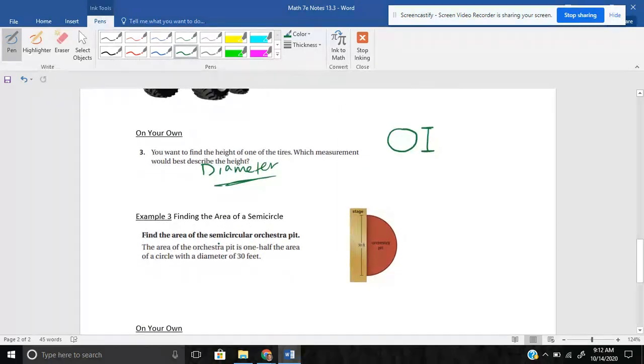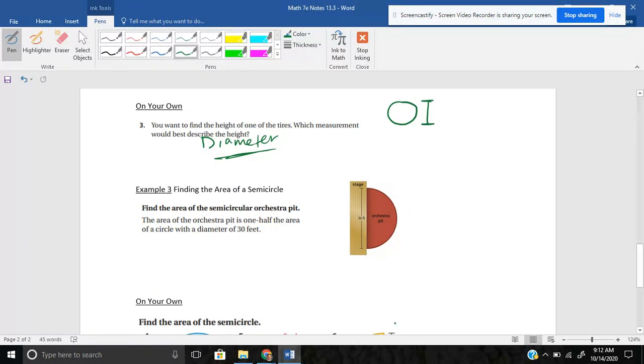Last example here. I know we're going kind of quick, but hopefully you're picking up on it. If you need more questions, again, be sure to ask. It says find the area of the semicircular orchestra pit. So we're trying to find the area of the red region here. This is the orchestra pit. The area of the orchestra pit is one half the area of a circle with a diameter of 30 feet. So a couple things that are important here. If we were to envision this as a full circle, we know how to find the area of a full circle. It's area equals pi r squared. Since we're just finding the semicircle, half of that, we would divide that by 2.